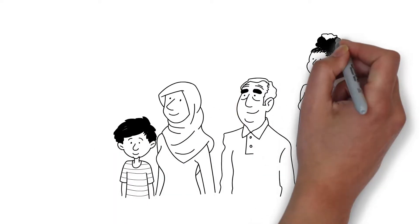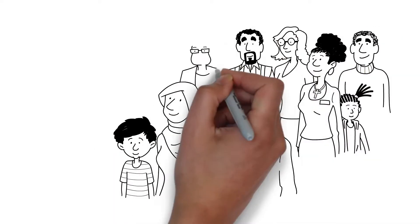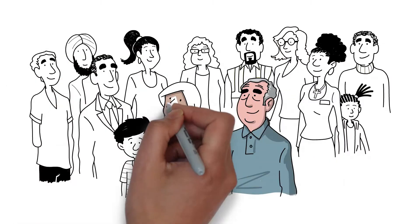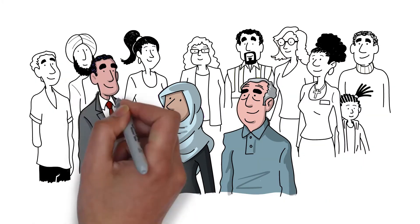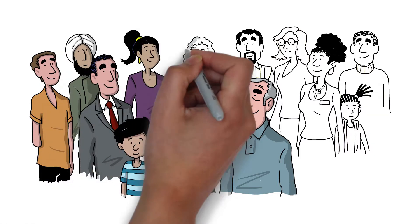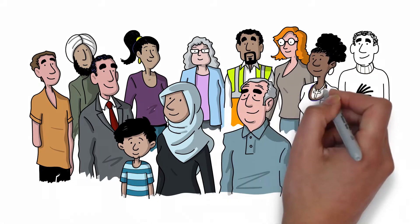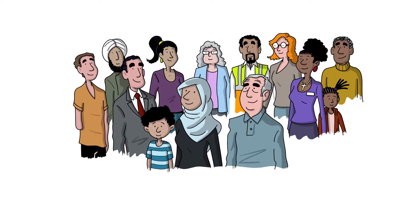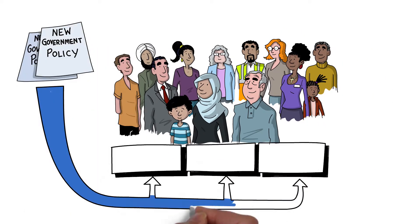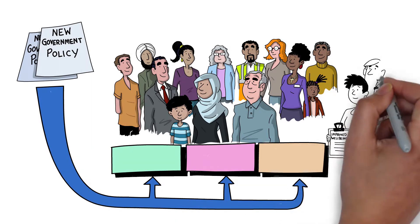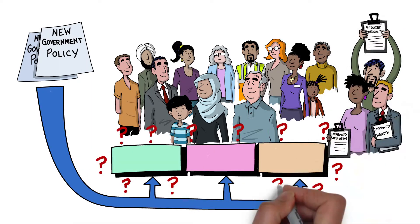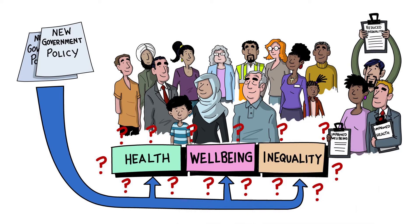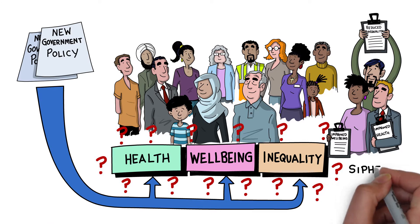Everyone in society is unique. People are different because of a variety of factors, for example age and sex, personality, behaviours, relationships, and the conditions in which they are born, live, work and age. These differences can make it hard to predict how changes in government policy will affect people and population groups, such as improving their health and well-being and reducing inequality — outcomes we're interested in, in Cypher.